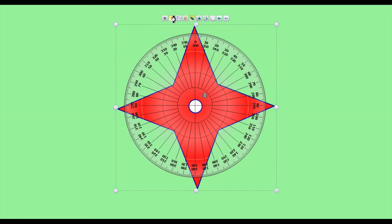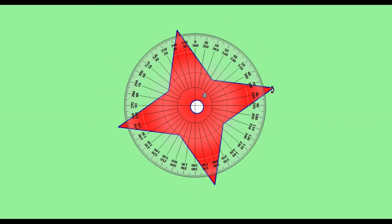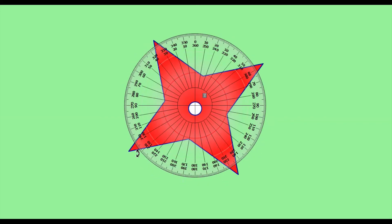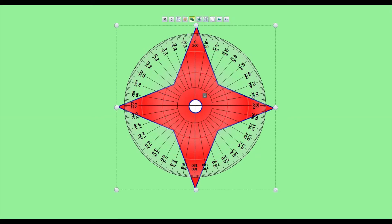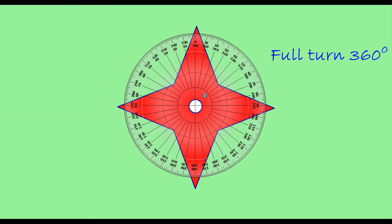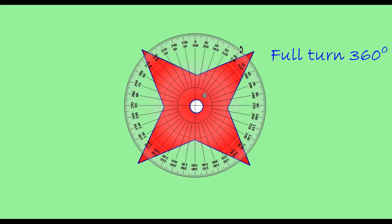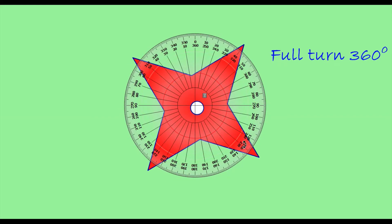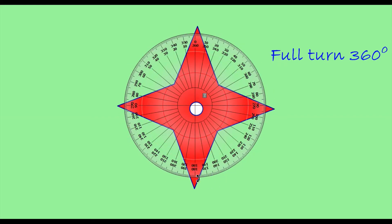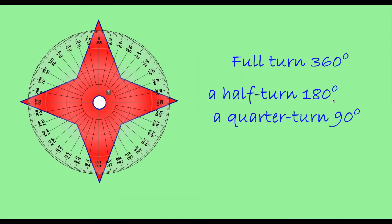The degree measure of the angle of rotation of a full turn is 360 degrees. A half turn is 180 degrees, and a quarter turn is 90 degrees.